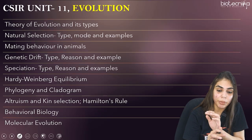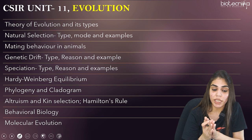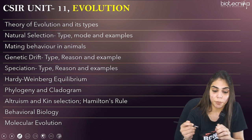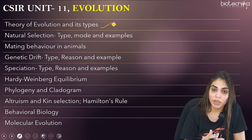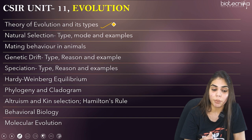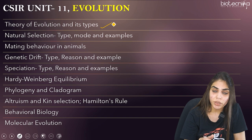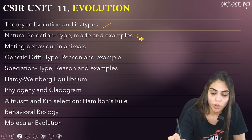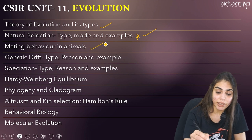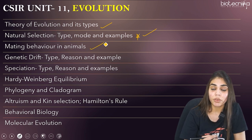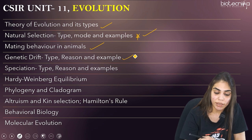Unit 11 is Evolution. Cover the theory of evolution and its types — Lamarckism, Darwinism, Neo-Darwinism, and Neo-Lamarckism. Natural selection is very important — there are three types, with their modes and examples. Also cover mating behavior in animals, types of genetic drift with reasons and examples, and types of speciation — peripatric, parapatric, and allopatric — including geographic barriers as a reason for allopatric speciation.